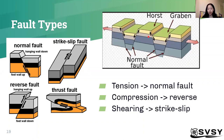This diagram shows horst and graben. These names aren't that important, but the key point is to show how normal faults can result in different landforms, such as rifts — and it's not necessarily only earthquakes that result.